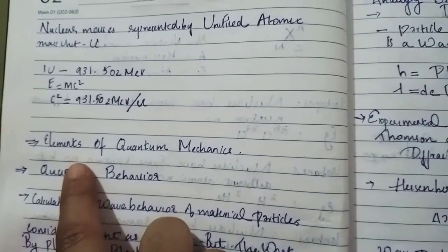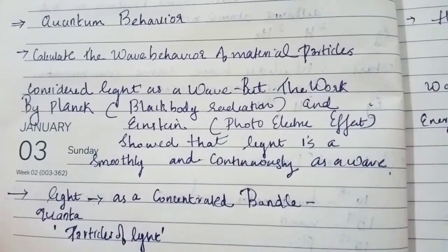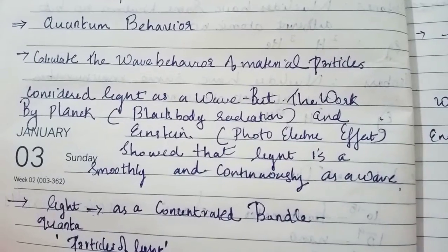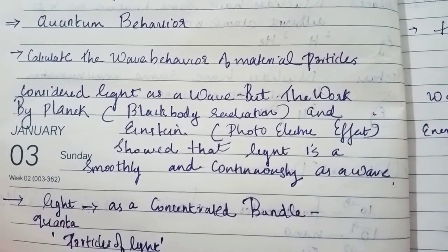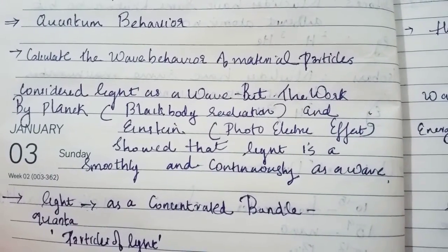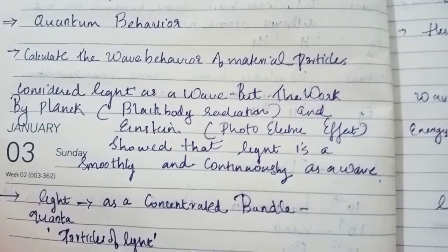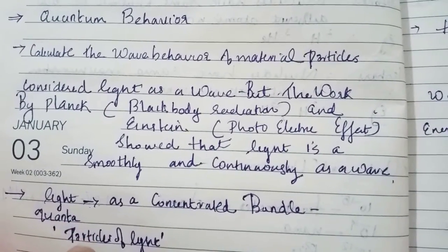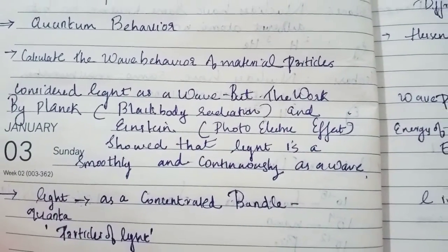Next, the reference book by Kenneth Crane discusses the elements of quantum mechanics. In quantum behavior, we discuss the nature of light — that is, the wave behavior of material particles. Early on, we considered light as a wave. But the works by Planck and Einstein, through black body radiation and the photoelectric effect, showed that light is not a smoothly continuous wave. Light behaves as a concentrated bundle, a quanta — that is, a particle of light.